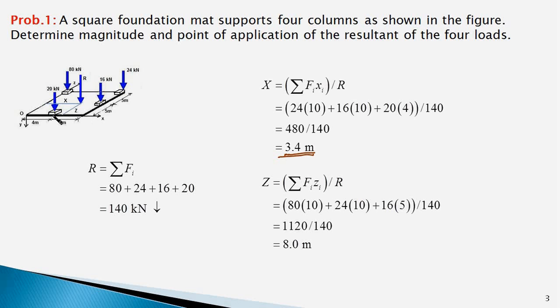Therefore, its moment arm would be 0 and the numerator here represents the sum of moments of all the forces about the x-axis. This whole term divided by the magnitude of the resultant would yield the z coordinate of the resultant force R.